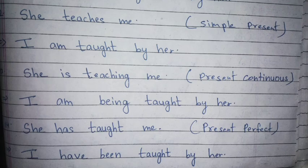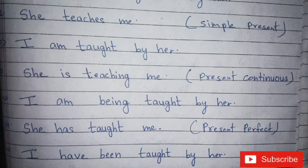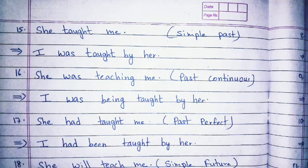She is teaching me — I am being taught by her. She has taught me — I have been taught by her. She taught me — I was taught by her. She was teaching me — I was being taught by her. She had taught me — I had been taught by her.